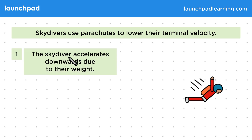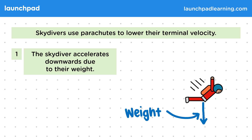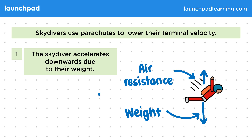In step one, the skydiver accelerates downwards due to their weight. Like any falling object, there are two forces acting on the skydiver: their weight, which is the force due to Earth's gravity, and also air resistance, a resistive force caused by collisions with air molecules. Initially, the weight is stronger than the air resistance, so there is a resultant downward force, and the skydiver is accelerating downwards.